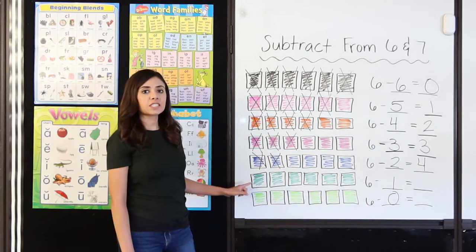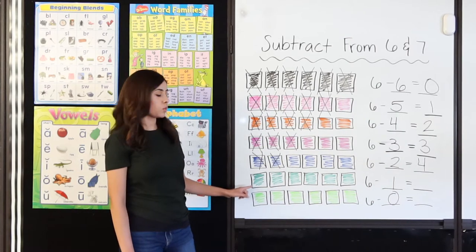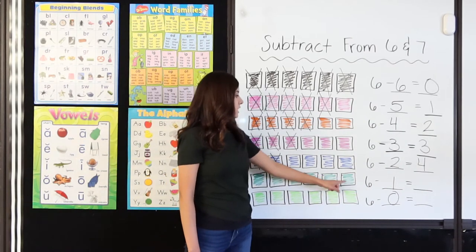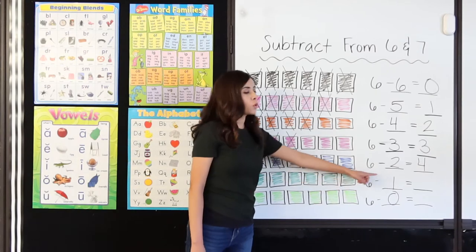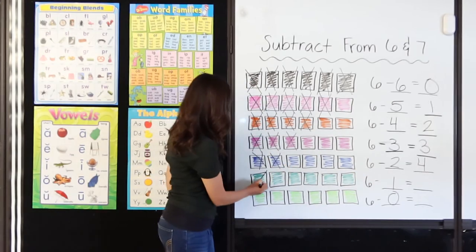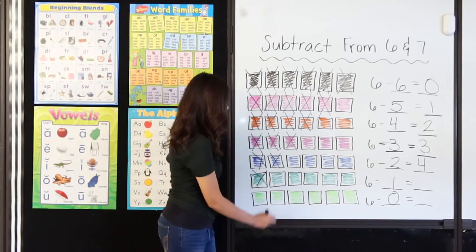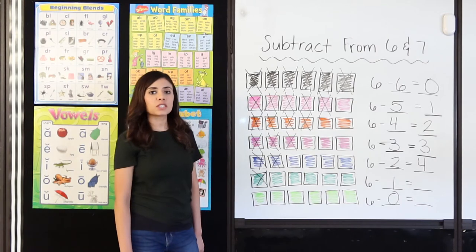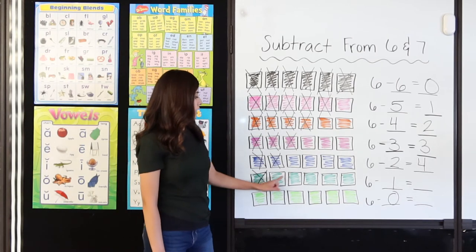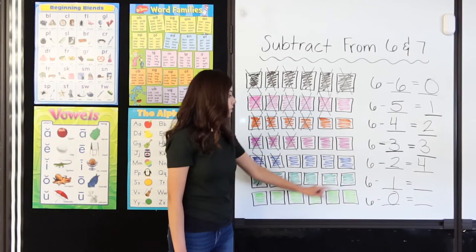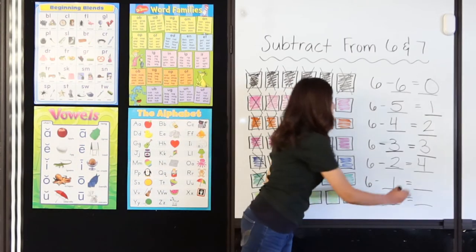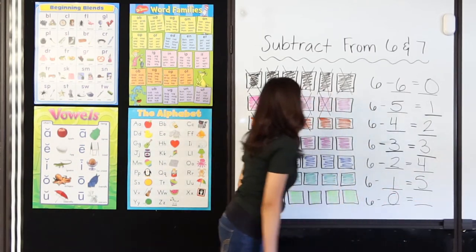Here I have 6 dark green squares — 1, 2, 3, 4, 5, 6. I am going to cross off the 1 that I am taking away: 1. How many dark green squares do I have left? 1, 2, 3, 4, 5. 6 minus 1 equals 5.